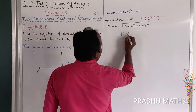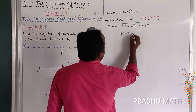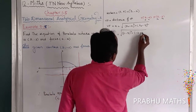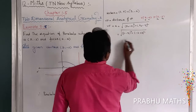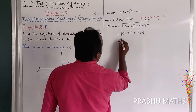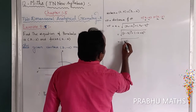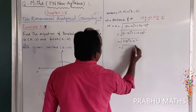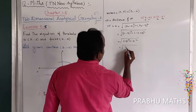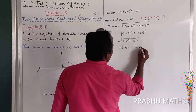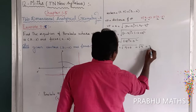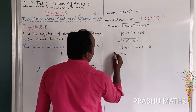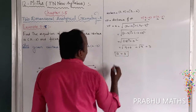Substituting: VF = √[(2 - 5)² + (-2 - (-2))²] = √[(-3)² + 0²] = √[9 + 0] = √9 = 3. So A = 3.